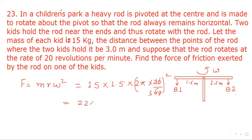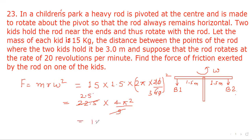This becomes 22.5 multiplied by 4π²/9. Cancelling the 9 with 22.5 gives 2.5, so the result is 10π² Newton. That is our answer.